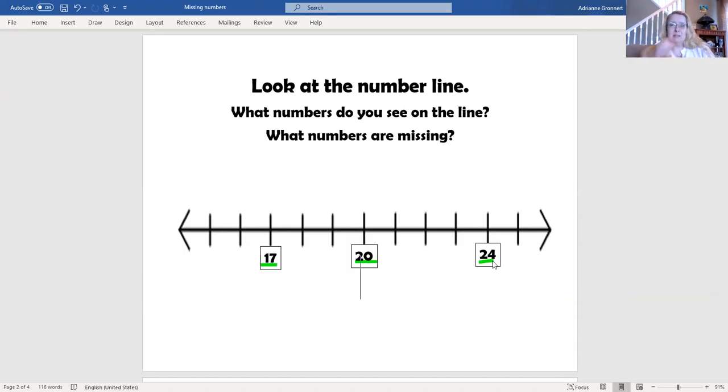What numbers are missing? How can I figure that out? I have three numbers on the line that I know, so I can count to find out what the missing numbers are.